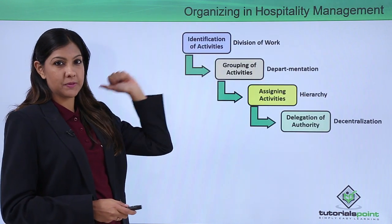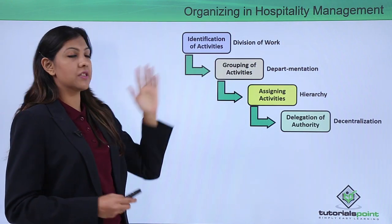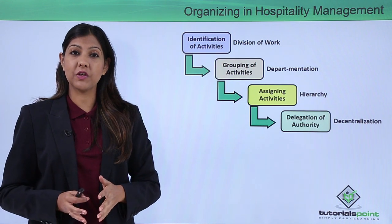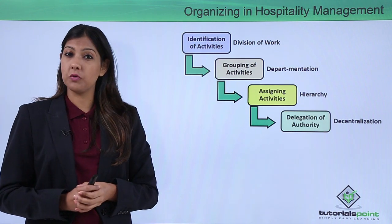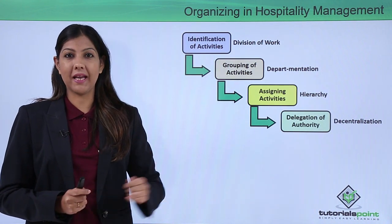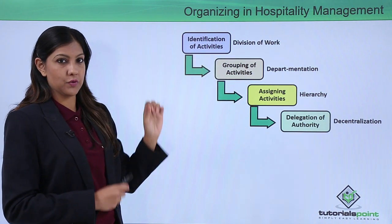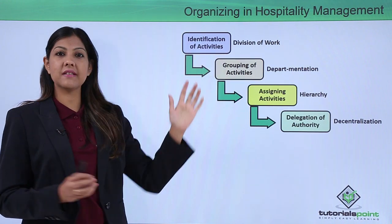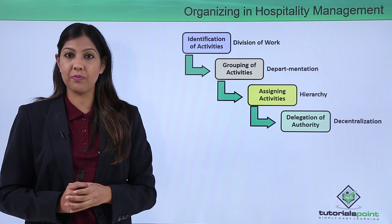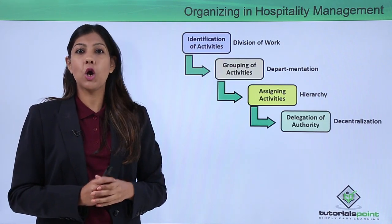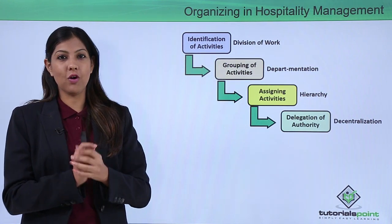Let's look at organizing in hospitality management. First, you need to identify activities and understand how division of work happens, because a hotel is a huge workplace with thousands of employees working in the front end or back end. You then need to group activities department-wise — for example, the F&B or food and beverage department, housekeeping department, or concierge department — grouping similar activities together to form a department.